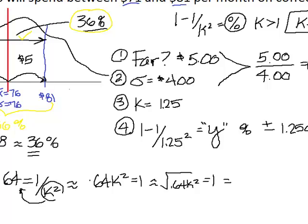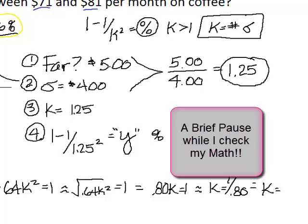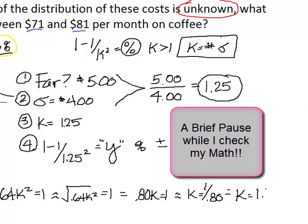What I know is that the square root of 1 is 1. 0.64 K squared is going to give me 0.80 K equals 1. Now, I'm going to divide to get K by itself. I'm going to say K equals 1 over 0.80. And now, I'm going to divide 1 by 0.80. And what I end up with is K equals 1.25.